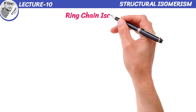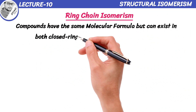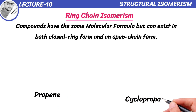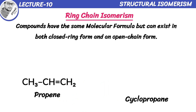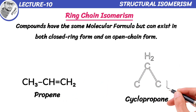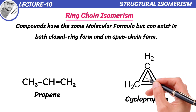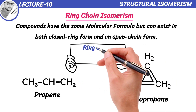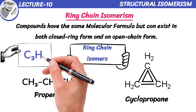Ring-chain isomerism occurs where compounds have the same molecular formula but can exist in both a closed ring form and an open chain form. Let's take the example of propene and cyclopropane. Propene is a straight chain alkene with three carbon atoms bonded together. On the other hand, cyclopropane is a cyclic compound where those same three carbon atoms form a triangle — it looks like a little ring. Propene and cyclopropane are ring-chain isomers of each other; they have the same molecular formula but their structures are different.